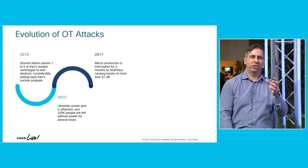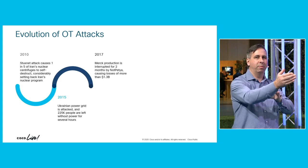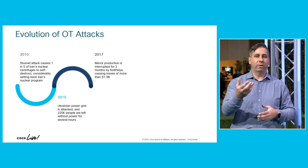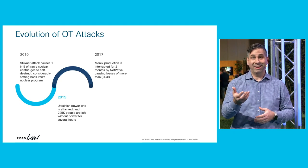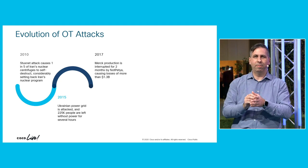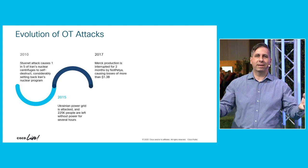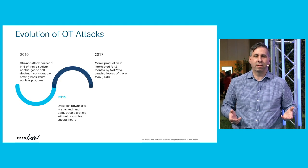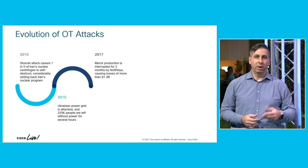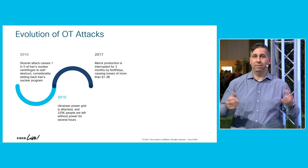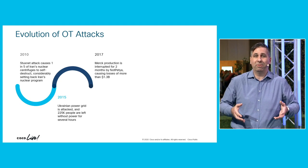Then attacks shifted to targeting private industries. NotPetya seemed like ransomware at first, but it was deliberately masquerading as such to distract attention from its real purpose: attacking industrial control systems. Companies suffered huge losses — for instance, pharmaceutical company Merck estimates losses during a two-month period of interrupted operations at $1.3 billion.